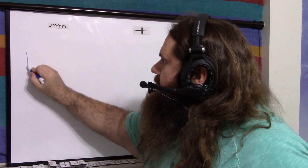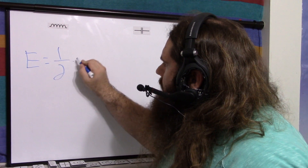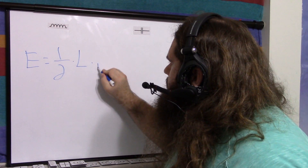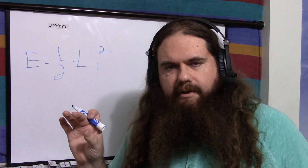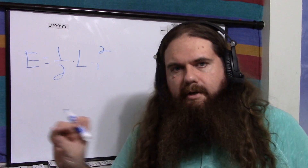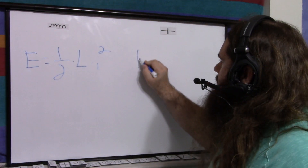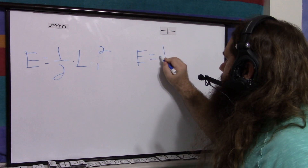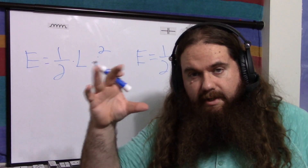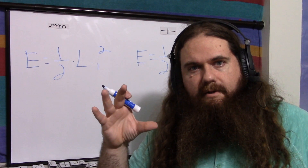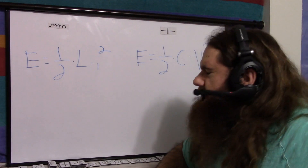For an inductor, the amount of energy in joules stored at any particular moment is one-half times the inductance in henries times the current squared. This is when the inductor is stable — not charging up or discharging. For a capacitor, the energy at a particular instant equals one-half times the capacitance times the voltage squared, where the voltage is the voltage across the plates — the voltage that the capacitor is charged to.